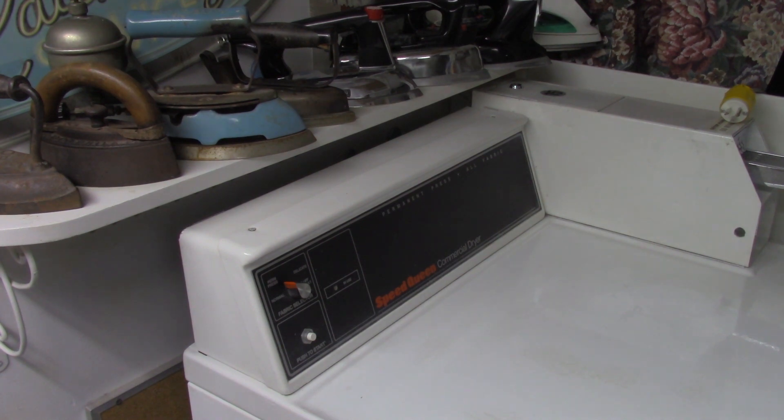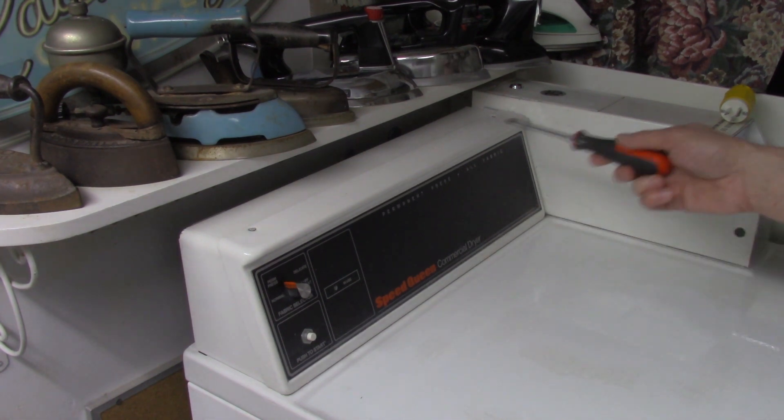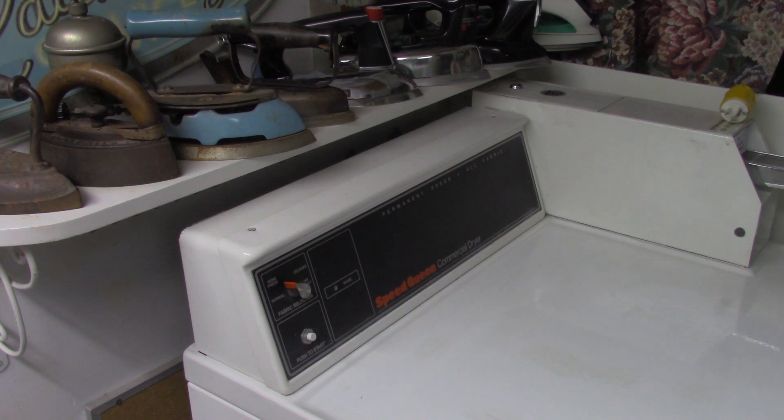No matter how big the dryer is, it still turns the drum and dries the clothing inside. A good thing about these Speed Queen dryers is that a lot of the parts are right up front in the control panel here, so they're very easy to service.